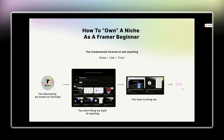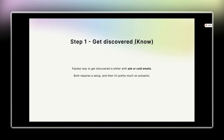Personally, it's very hard for me to buy something — it has to solve a specific problem for me, but it still fits into the know, like, and trust formula. So how does that apply to you as a Framer beginner getting started in freelance? Step one: get discovered — that's the 'know' pillar. The fastest way to get discovered is either with ads or cold emails. Organic content is great but you cannot control the algorithm, and so you cannot control your results.